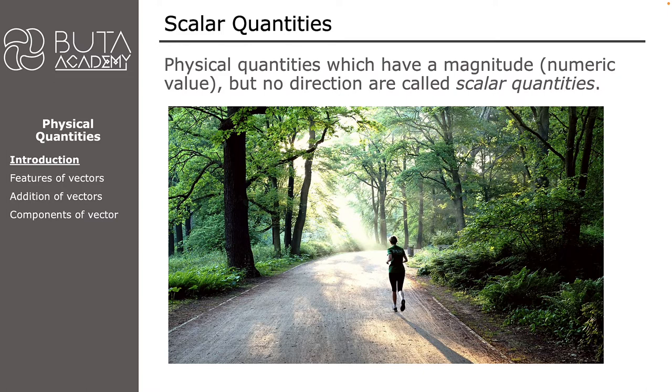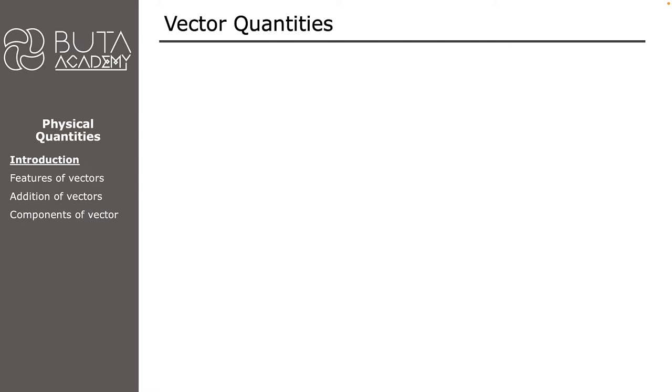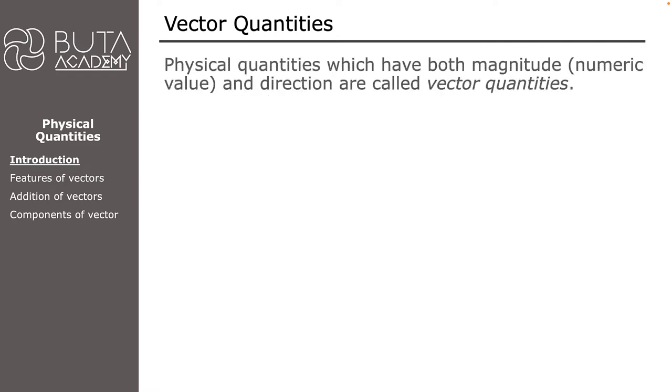On the other hand, sometimes we will not be able to express ourselves clearly without mentioning numeric value and direction together, and this is when we will use vectors to do so. Vectors are physical quantities which have both magnitude or numeric value and direction. It can be difficult to understand this definition without an example.